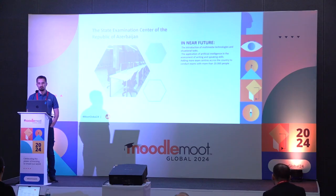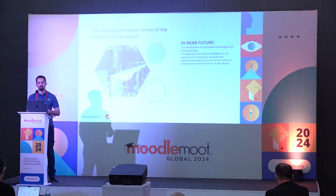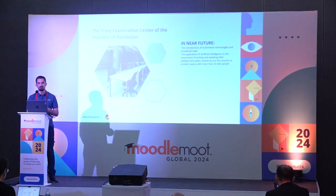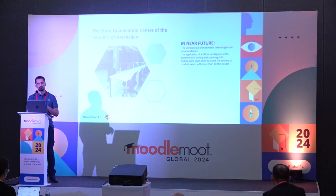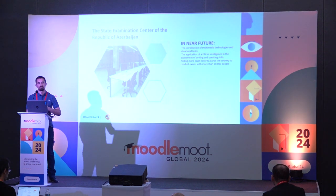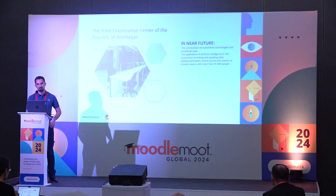We also want to apply artificial intelligence in the assessment of writing and speaking skills. Right now, only teachers are allowed to mark and grade writing and speaking skill questions. But in the future, we want to do it using AI — for example, half of the questions will be graded by AI and the other half by teachers. We want to compare how AI performs and then introduce it to our grading system.